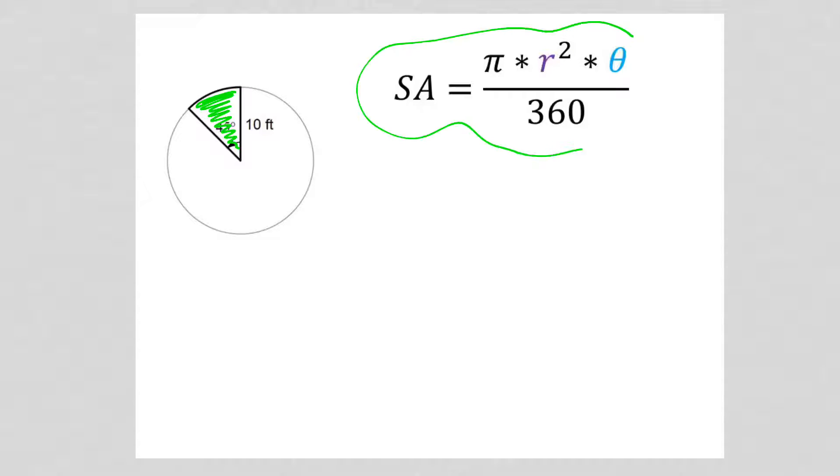This is the formula we use to find sector area. That's what the SA stands for. So I see that my radius is 10 feet. My central angle, that's what theta represents, is 45 degrees.